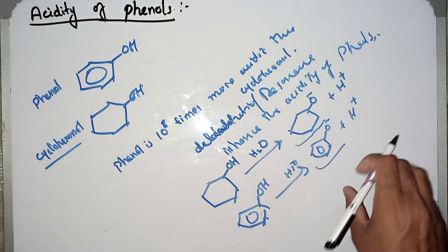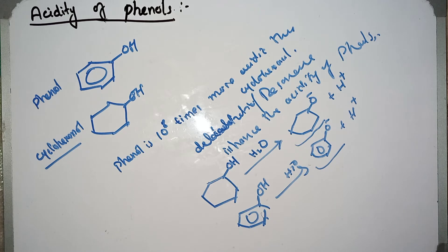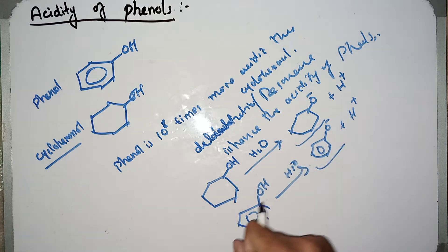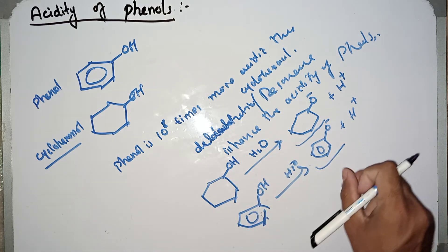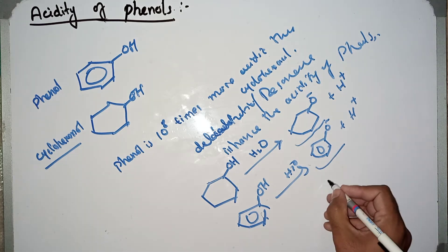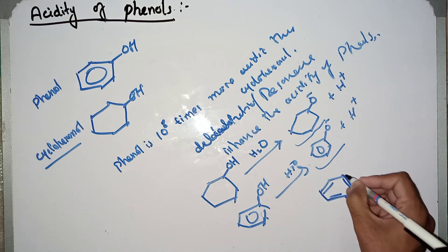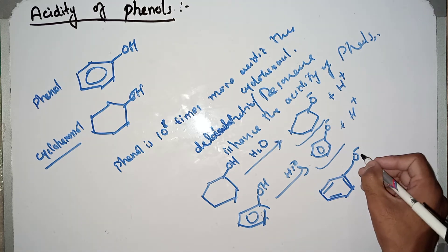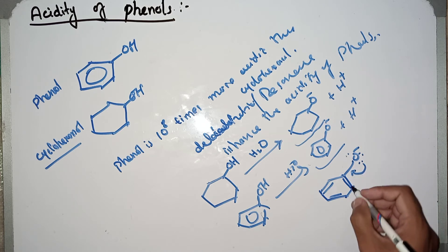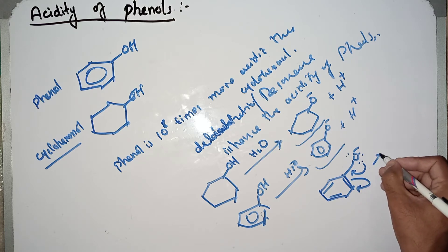Let's assume that both have the same concentration of phenoxide ion and the same concentration of oxide ion. Which one will be more stable? In which case will the equilibrium shift toward the right? In the case of the phenoxide ion, this is its structure. The negative charge — this lone pair — will shift toward the ring and make a double bond, so this double bond shifts and produces one resonance structure.